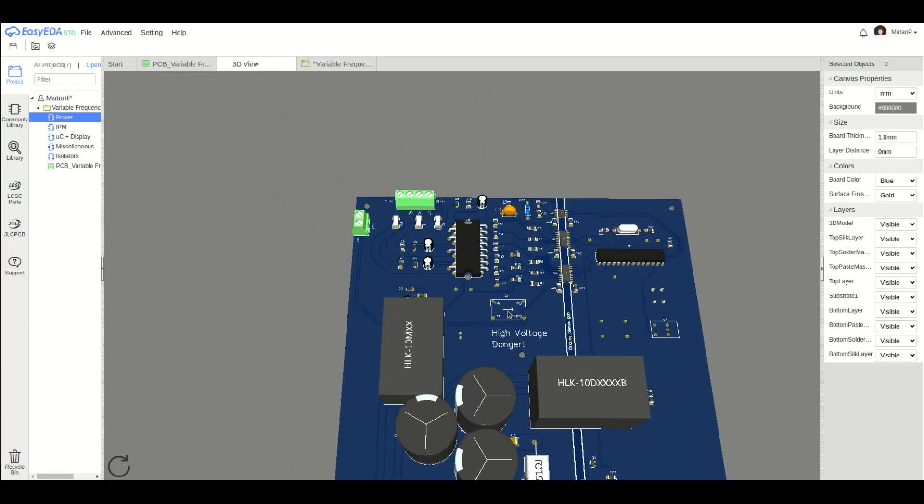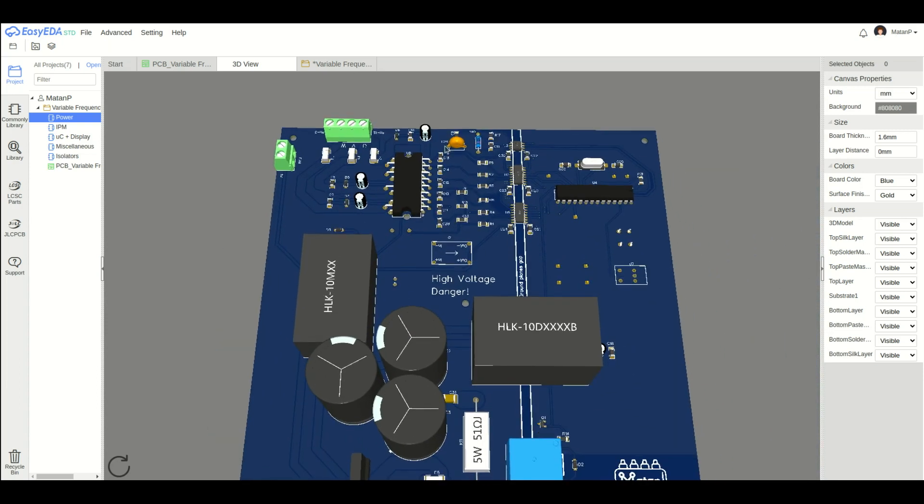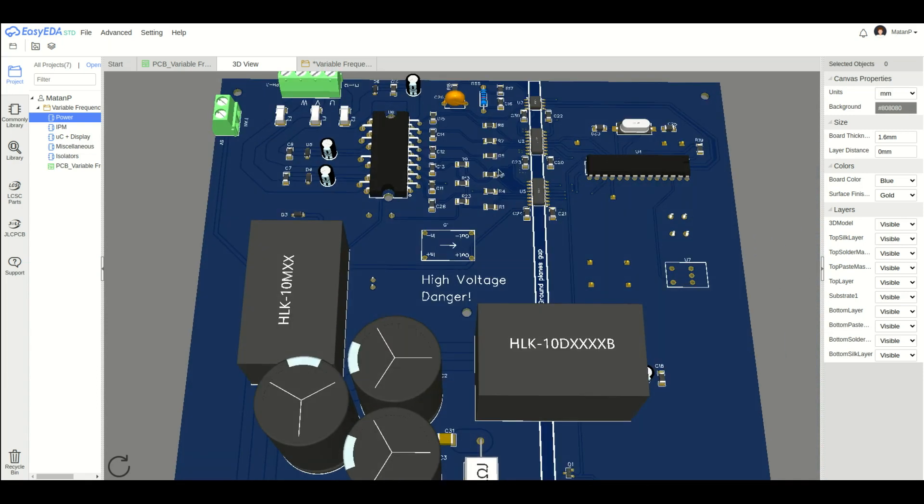There are also two connectors to connect to the motor phases, a fuse for each phase, and a connector to power a 5 volt fan for cooling. And of course, there are a lot of peripheral components I didn't go over. They're mainly recommended by the data sheets of the major components.